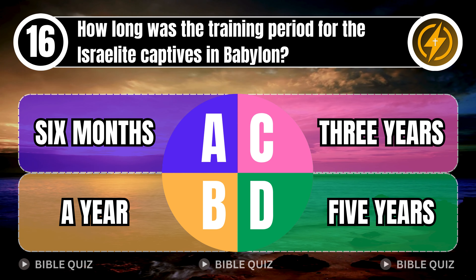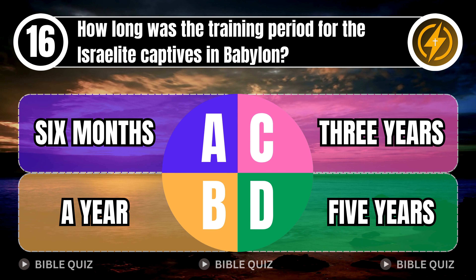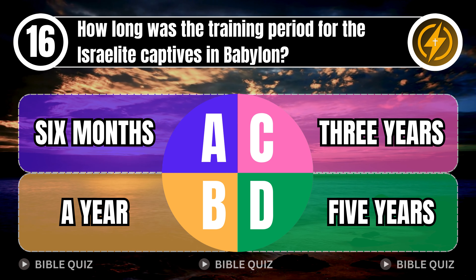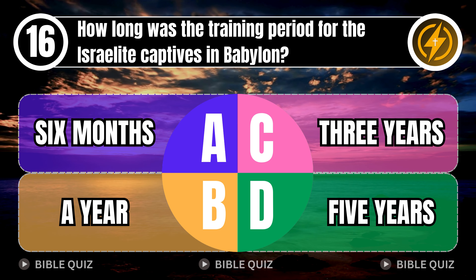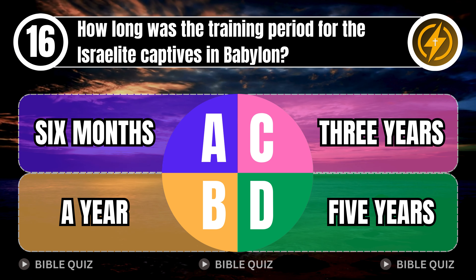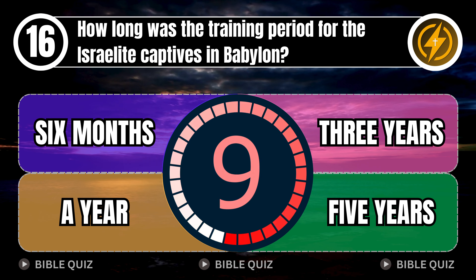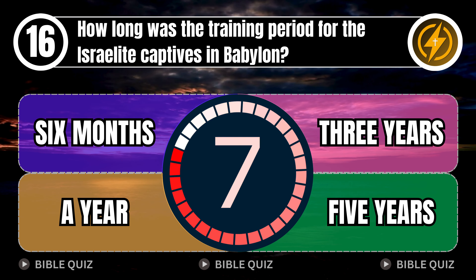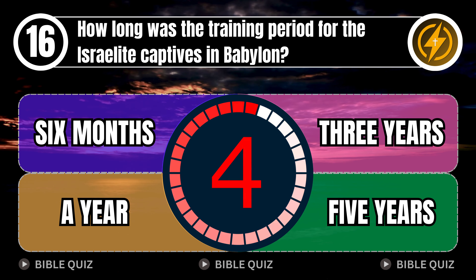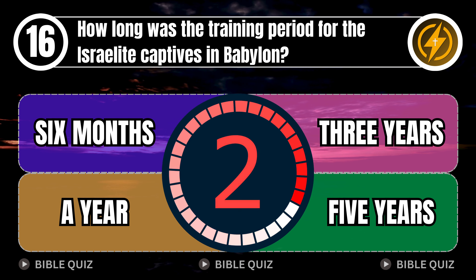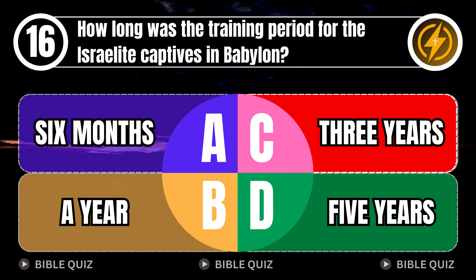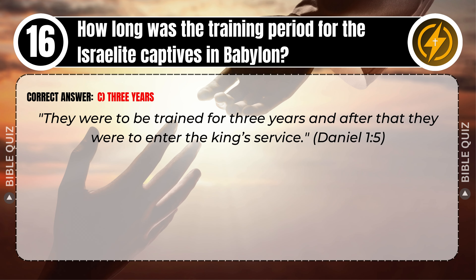Question 16: How long was the training period for the Israelite captives in Babylon? A. Six months. B. A year. C. Three years. D. Five years. Correct answer: C. Three years. Explaining the Bible — they were to be trained for three years, and after that they were to enter the king's service. Daniel 1 verse 5.